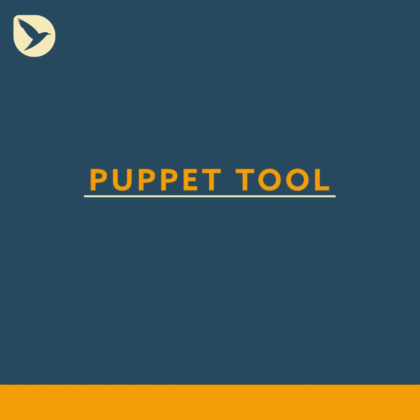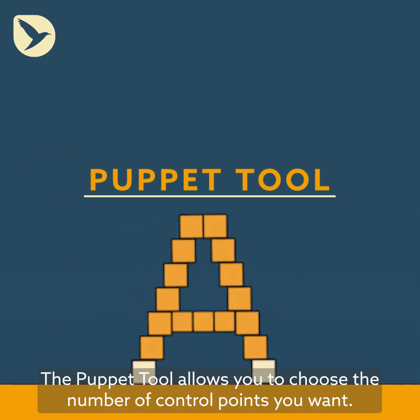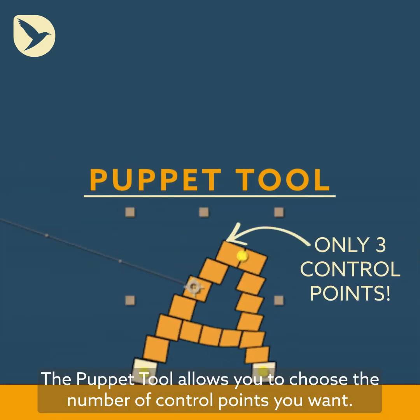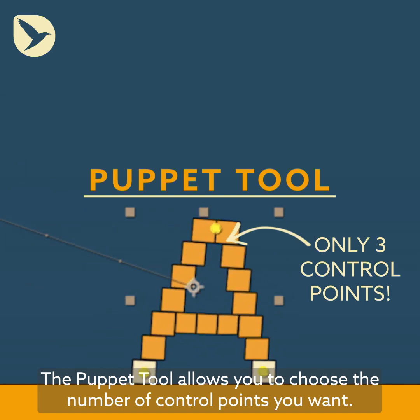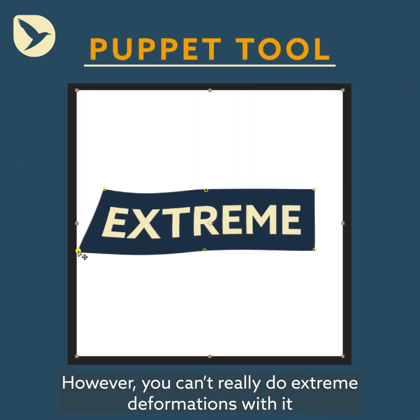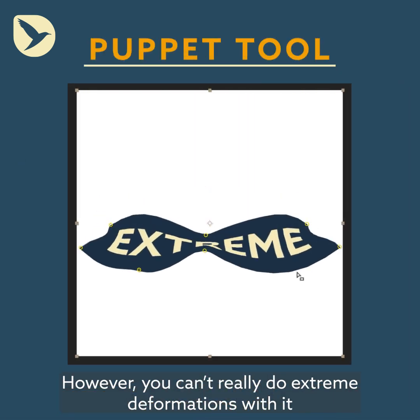Number 2: The Puppet Tool. The Puppet Tool allows you to choose the number of control points you want. However, you can't really do extreme deformations with it.